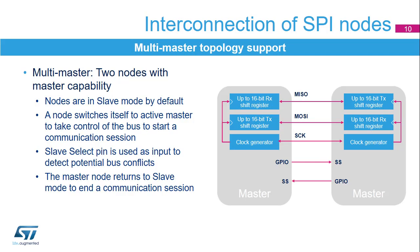SPI networks can operate in a multi-master environment. This mode is used to connect two master nodes exclusively. When either node is not active, they are by default in slave mode. When one node wants to take control of the bus, it switches itself into master mode and asserts the slave select signal on the other node through a GPIO pin. Both slave select NSS pins work as a hardware input to detect potential bus collisions between nodes, as only one can master the SPI bus at a single time. After the session is done, the active master node releases the slave select signal and returns back to passive slave mode waiting for the next session's start.